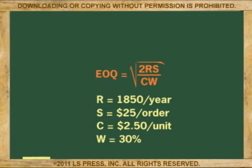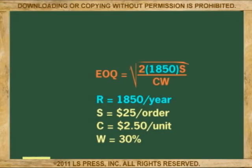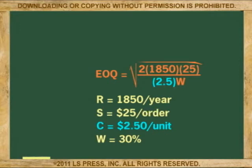According to the equation, the quantity to be ordered every time is Q, and Q is equal to the square root of 2 times the number of units sold per year, R, times the ordering cost, S, divided by the cost per unit, C, times the warehousing cost, W, as a percent. Substituting the input values, we have 1,850 for R, $25 for S, $2.50 for C, and 0.3 for W.